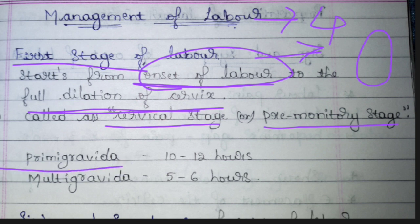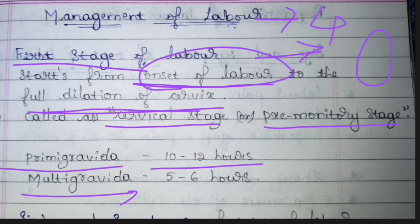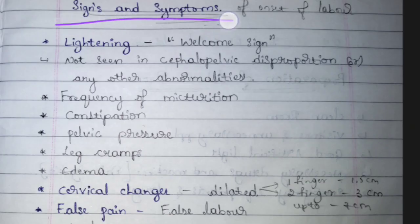For primigravida (first delivery) women, the first stage occurs around 10 to 12 hours — if pain begins at 1 o'clock, full dilation of the cervix occurs around 10 to 12 hours later. For multigravida women (second or third delivery), this stage occurs around 5 to 6 hours.